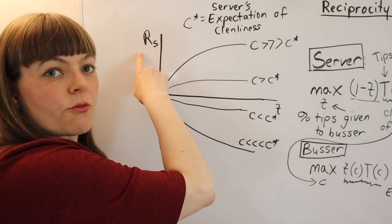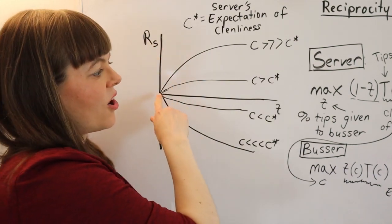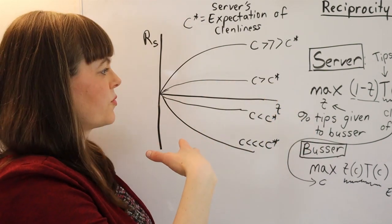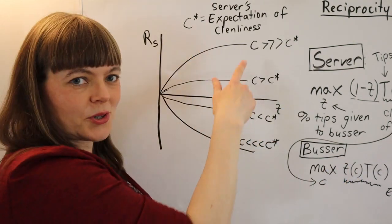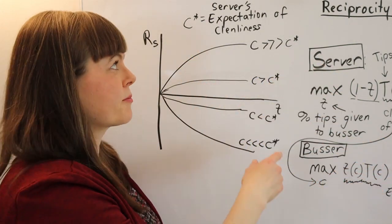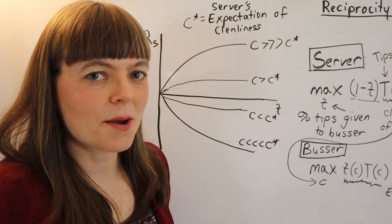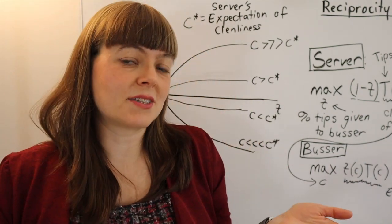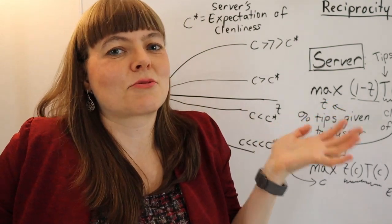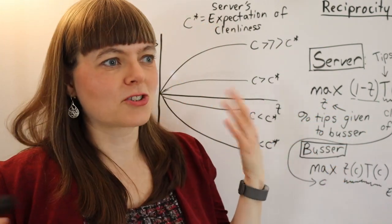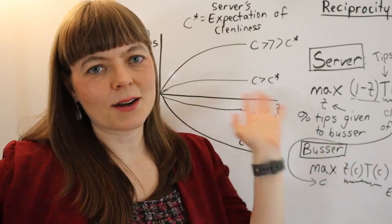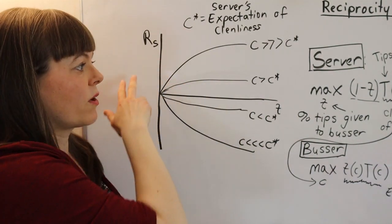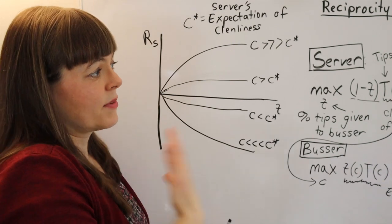I've drawn the term, we've got reciprocity experienced by the server on the y-axis. On the x-axis, we have the tips or the percentage of the server's tips that the server gives to the busser. And I've introduced a new term, which I will probably need to go build into the model, but that is the server's expectations about how clean the busser is going to make the tables. So that expectation could be really high, perhaps if the server has worked at really high class restaurants in the past, or it could be really low if the server is comparing the busser to her kid brother or something like that.